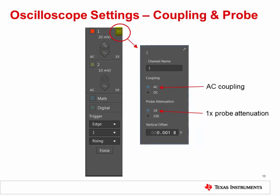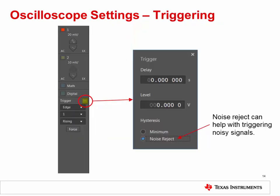The icon at the top right of the oscilloscope opens a new window with more options for each channel. Each channel can be given a custom name. Set the coupling mode to AC and set probe attenuation to 1x. The icon at the top right of the trigger settings opens a new window with more trigger options — the trigger time delay and voltage level can be set; leave these both at 0. Hysteresis is also available to help with triggering noisy signals. Try both options, but for this lab use noise reject mode.